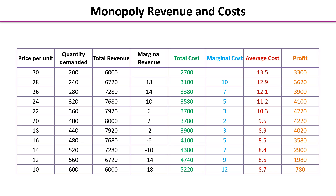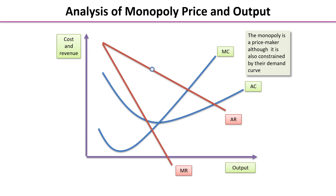Now we're going to have a look at the diagram. Costs and revenue are on the y-axis, outputs on the x-axis. The average revenue curve is falling and downward-sloping, indicating market power.